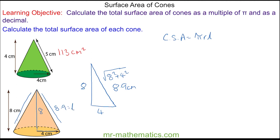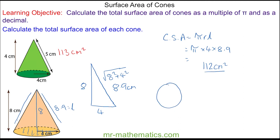We can put these values into our formula: pi multiplied by the radius, which is 4, multiplied by the slant length, which is 8.9. So the curved surface area is approximately 112 centimeters squared to three significant figures. We also need to add the base area; the base is a circle of radius 4, so we use pi r squared. The radius is 4, giving us 16 pi.